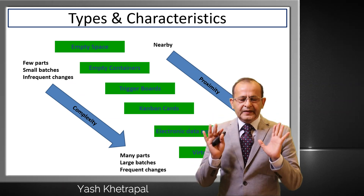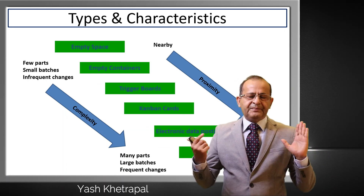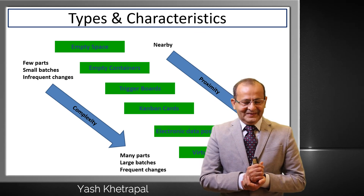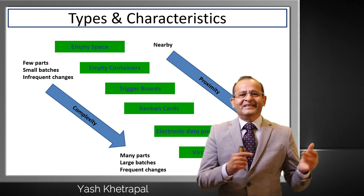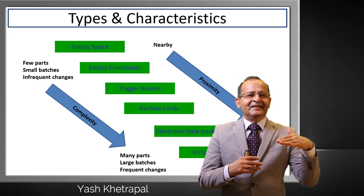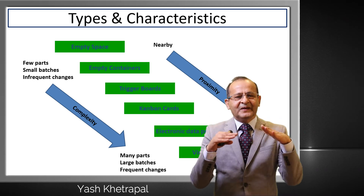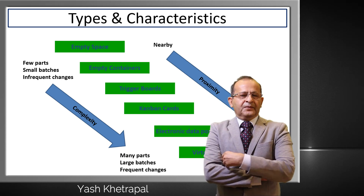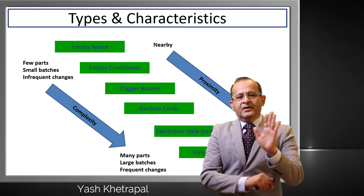We can also have trigger boards, but trigger boards are applicable only where the part family is small. I saw such magnetic trigger boards in Japan at a large factory doing injection molding — big parts like bumpers. They had 10 to 12 types of plastic material, 10 to 12 types of oils, and a total part family of 30 to 35 items. They could happily use trigger boards. But this is limited to die casting and injection molding — not for others.